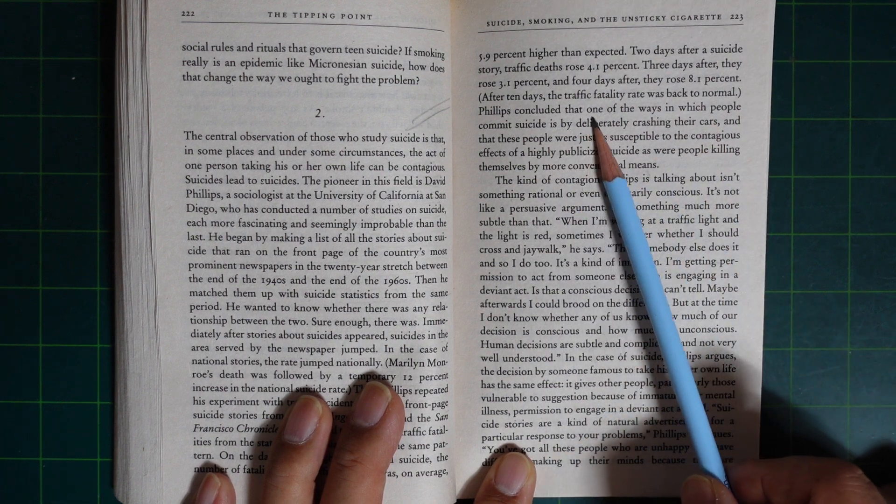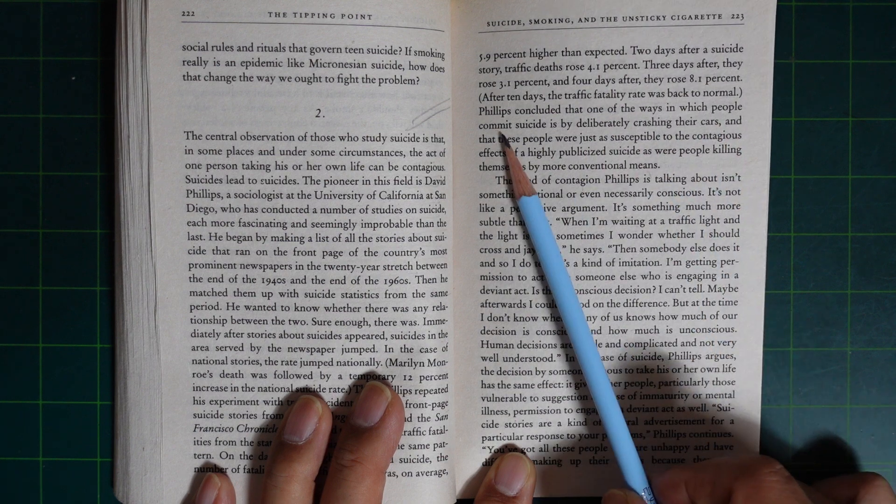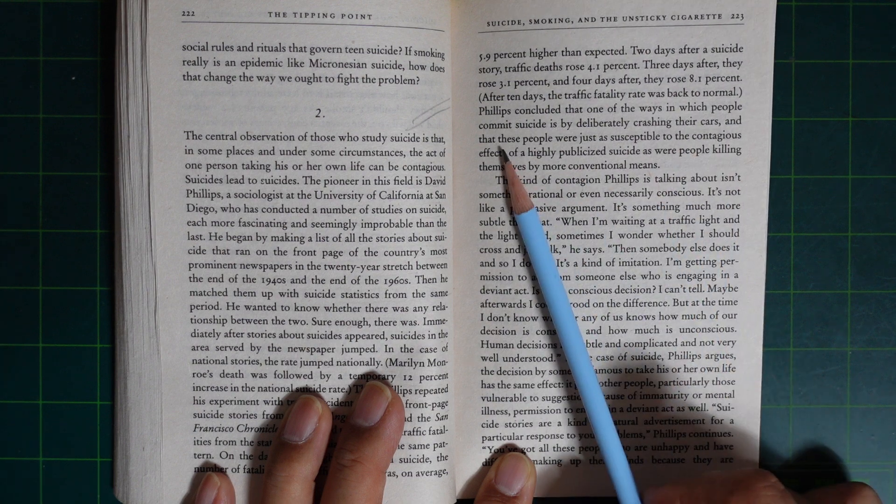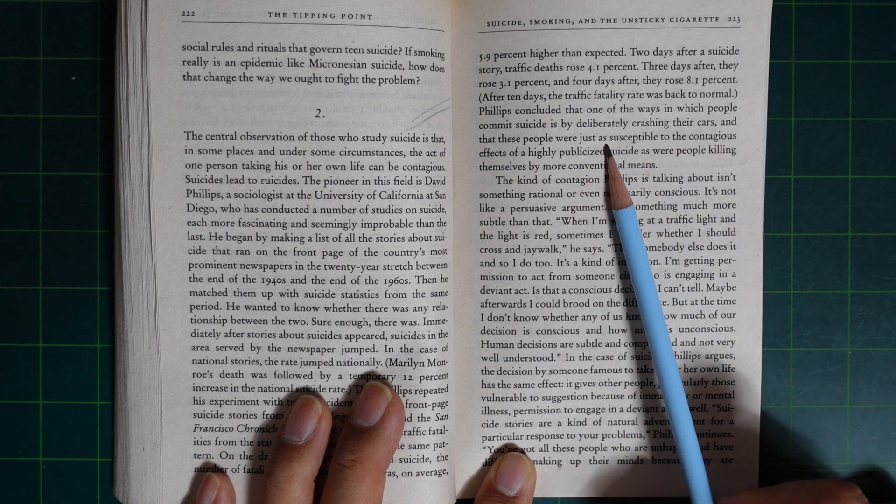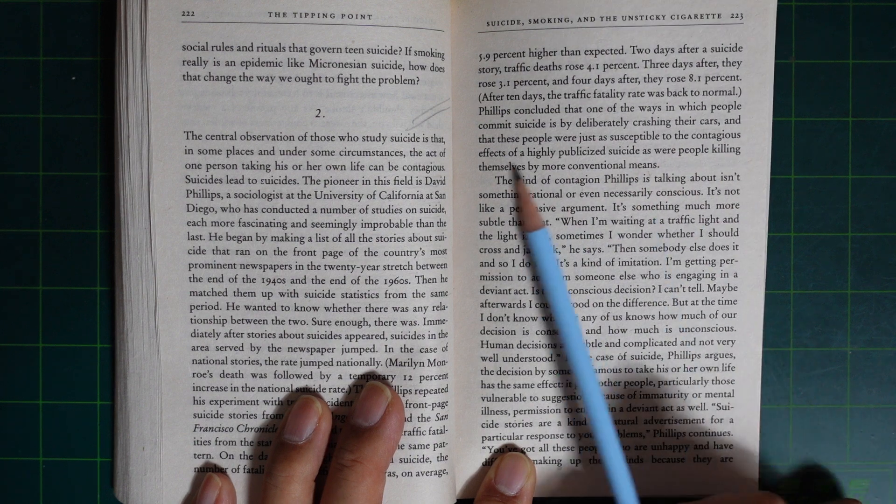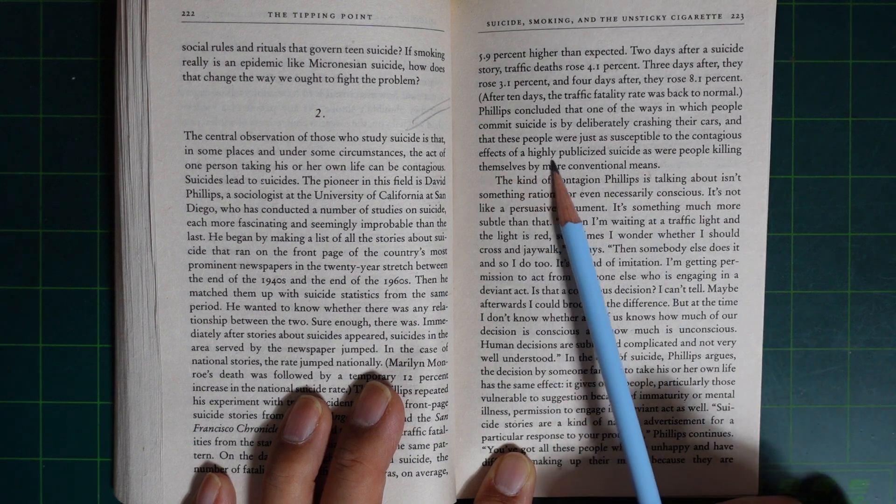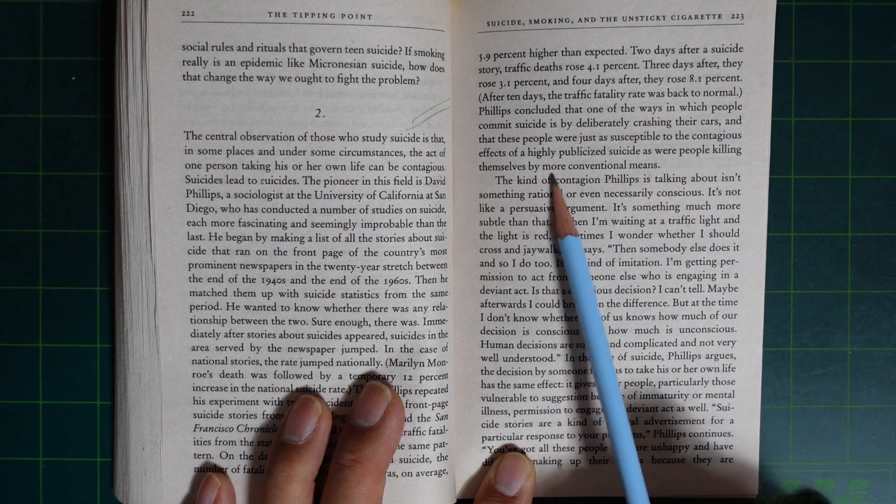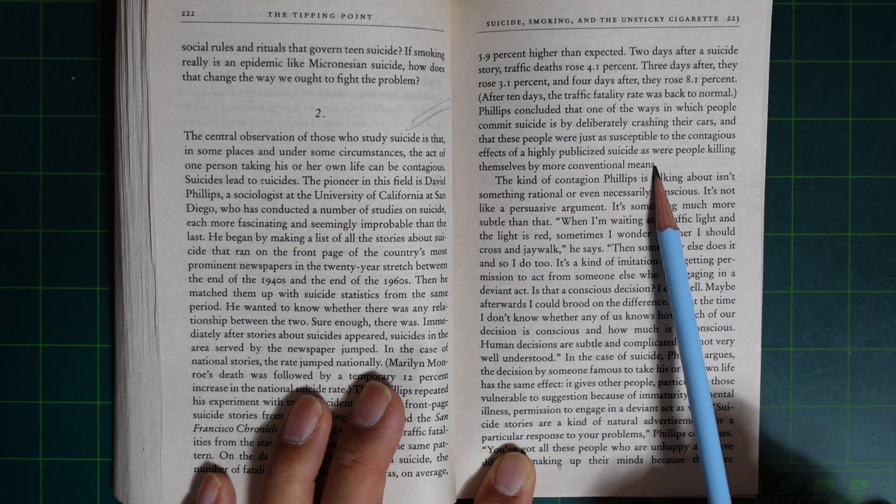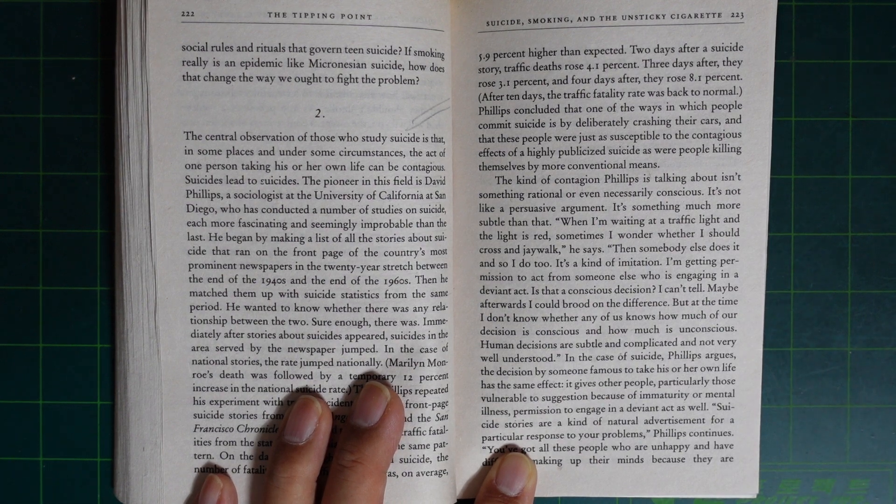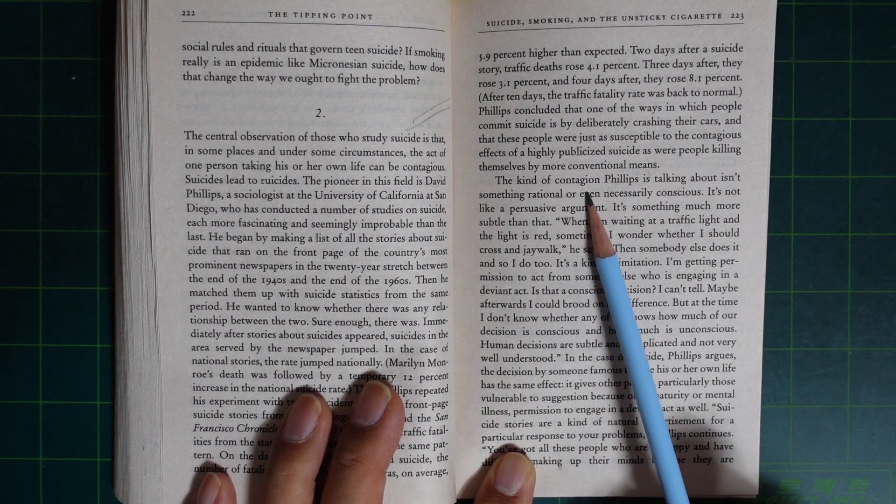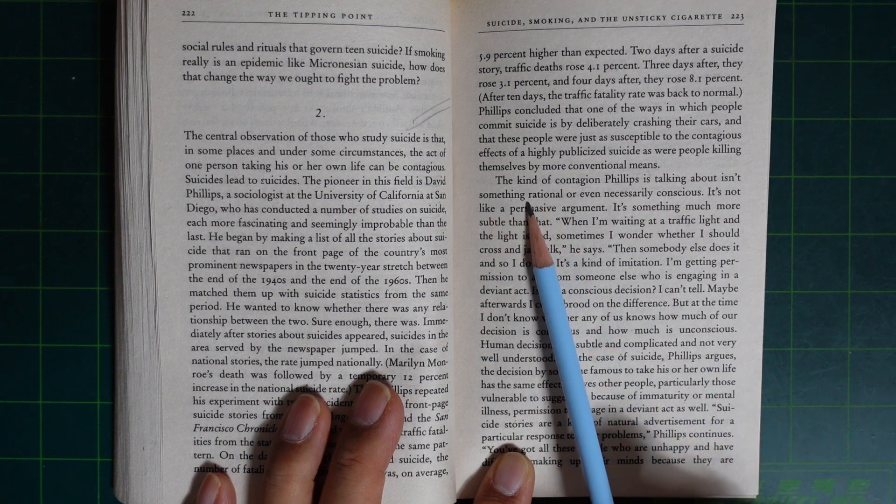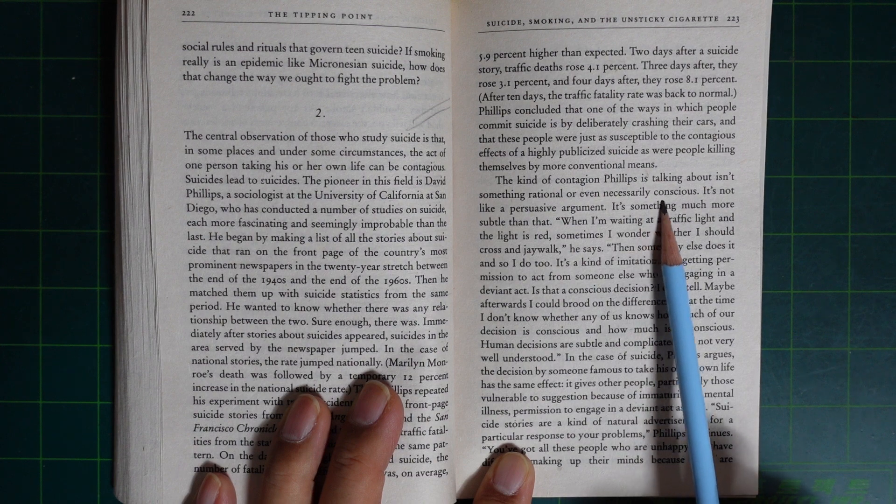Phillips concluded that one of the ways in which people commit suicide is by deliberately crashing their cars, and these people were just as susceptible to the contagious effects of highly publicized suicides as were people killing themselves by more conventional means. The kind of contagion Phillips is talking about isn't something rational or even necessarily conscious.